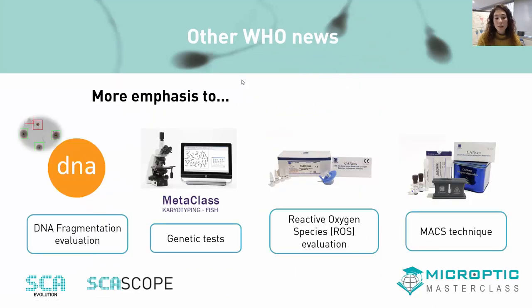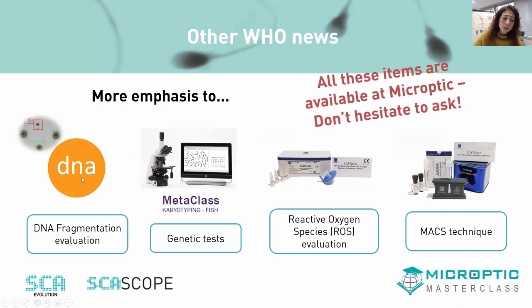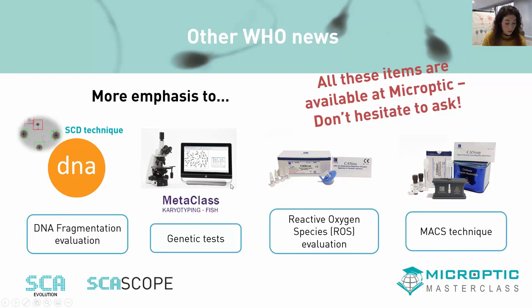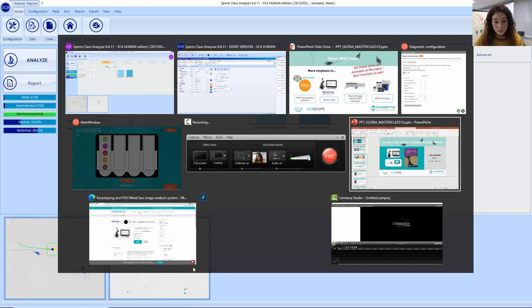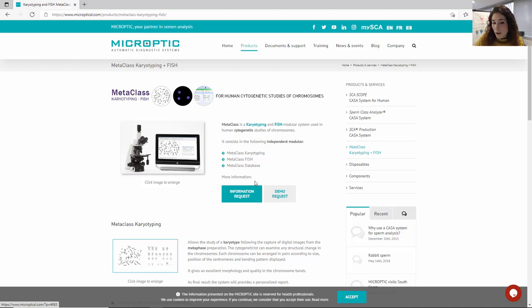Finally, more emphasis has been given to DNA fragmentation testing. DNA fragmentation is an automatic module compatible with SCA Evolution and SCA Scope, based on the sperm chromatin dispersion technique — the HALO test — and can be added to your routine analysis. Regarding genetic tests, they now have more importance to identify diverse forms of sperm chromosomal abnormalities and gene mutations. Related to this, we also have another product called MetaClass, which is not a CASA system, but can be used for karyotyping and FISH — available in different models. You can check our website for more information or request details.